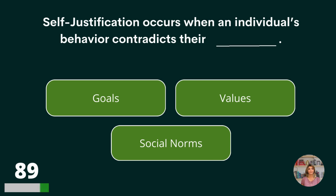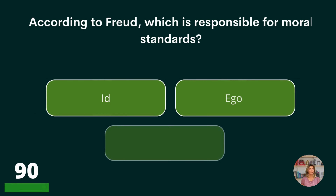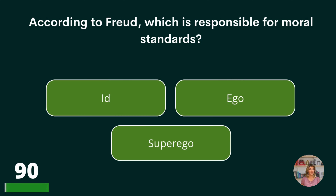Self-justification occurs when an individual's behavior contradicts their goals, values, or social norms? Values.